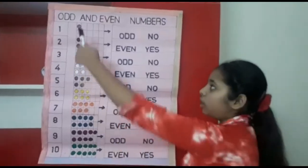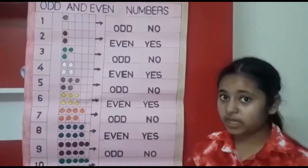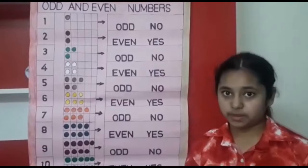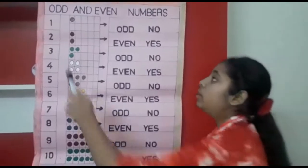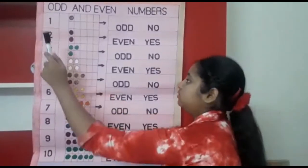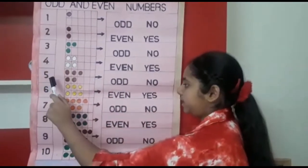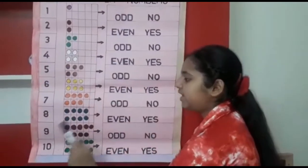Now, what is odd numbers? Odd numbers are those numbers which are not divisible by 2. For example, 1, 3, 5, 7 and 9.